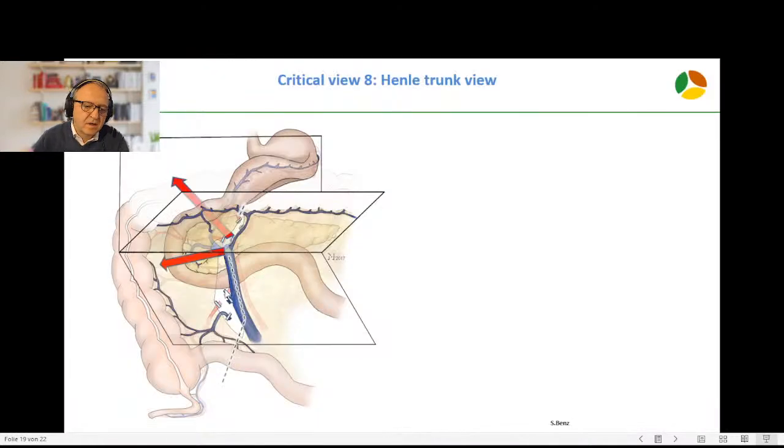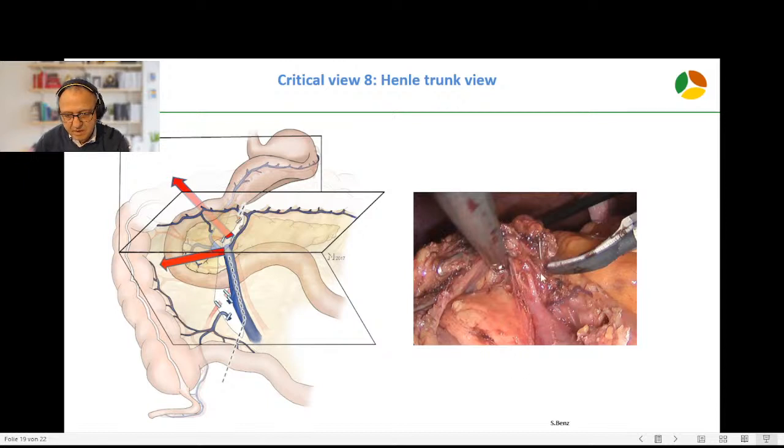The last step of central dissection is the dissection of the Henle trunk. The strategy here is to stay on the anterior side of the SMV looking for the Henle trunk and staying anteriorly. Then you can divide all veins running into the Henle trunk from anteriorly. This will be critical view number 8: SMV here, Henle trunk, and here the first vein from anteriorly running into it that can later be divided.